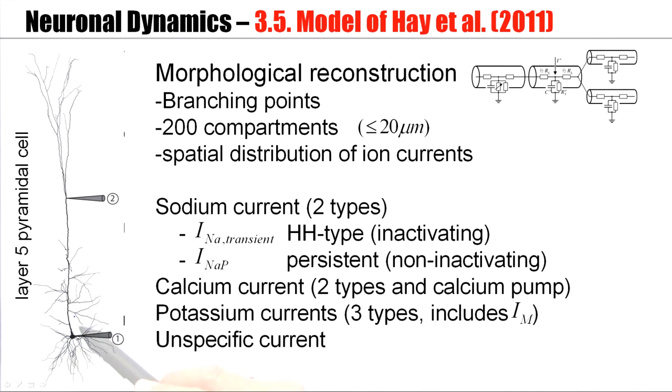This is an image of a layer 5 pyramidal cell, and you see many, many branching points. Here the main dendrite splits up in two or three sub-branches. Here there are lateral branches. Now it's possible to do a morphological reconstruction, the anatomy of the dendritic tree, and translate this into a compartmental neuron model of the type that I have just described, including branching points. For a dendrite of this size, it's not unusual to use, say, 200 compartments. Each compartment would correspond to a little segment, which is worth less than 20 micrometers.